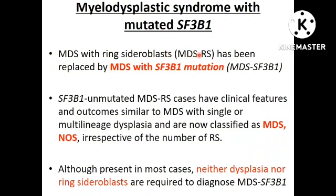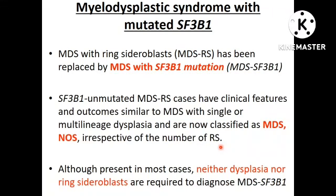MDS with ring sideroblasts has been replaced by MDS with SF3B1 mutation. SF3B1-unmutated MDS ring sideroblast cases have clinical features and outcomes similar to MDS with single or multilineage dysplasia, so they are classified as MDS-NOS irrespective of the number of ring sideroblasts. Ring sideroblasts with SF3B1 mutation only will be categorized as MDS with SF3B1 mutation. Neither dysplasia nor ring sideroblasts are required to diagnose MDS with SF3B1 mutation — only the presence of the SF3B1 mutation matters.